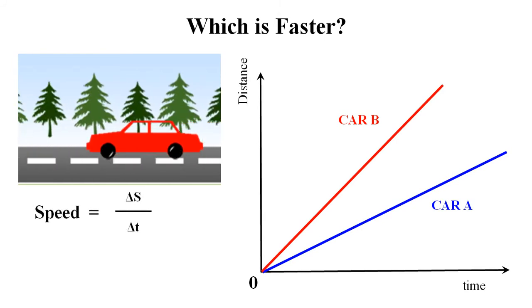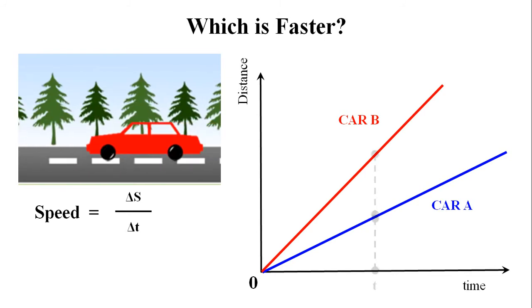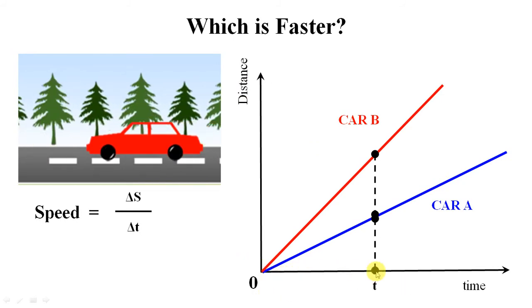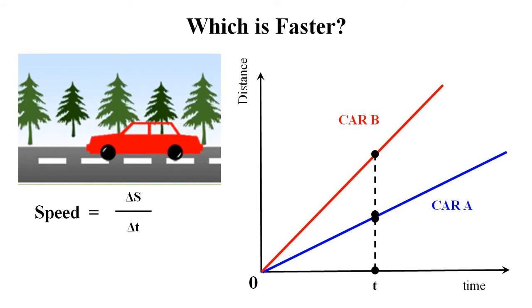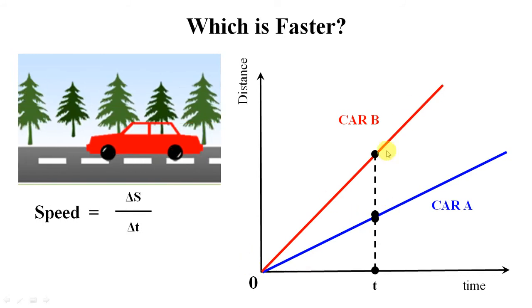We take a vertical line for both graphs, fixing the time taken by both vehicles. Now let's analyze the distance traveled by each vehicle in this same amount of time. To find the distance covered by Car A and Car B in the same time interval, we take a horizontal line for each.